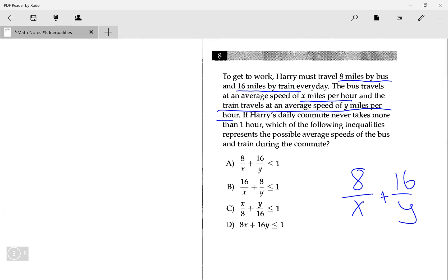If Harry's daily commute never takes more than one hour, never takes more, that means it's going to be less than or equal to, because that means it's going to be less than one or it can be the same as one. Because it never takes more, that means one is still a possible solution. Which of the following inequalities represents the possible average speed of the bus and trains? So this equation I just wrote, 8 over x plus 16 over y less than or equal to 1, this is the exact same as equation A. So equation A is correct.